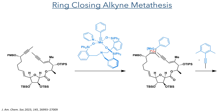With the two alkyne fragments now in place, they could carry out the critical ring-closing alkyne metathesis reaction. This was carried out using a molybdenum-based canopy catalyst, similar to that seen in the synthesis of portamine. This catalyst, also developed by the Fürstner group, offers a significant improvement over previous alkyne metathesis catalysts, as it can be handled in air and stored long-term in a desiccator.